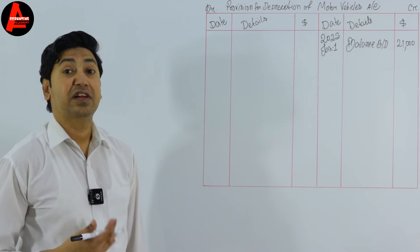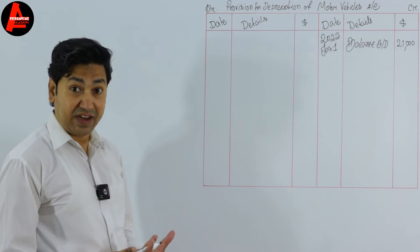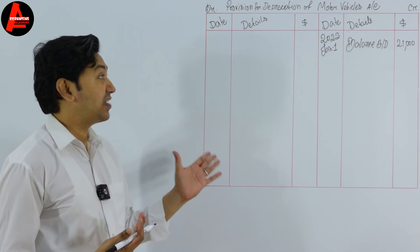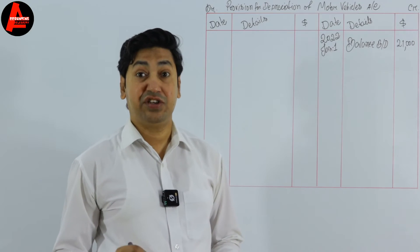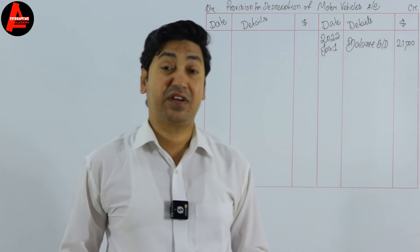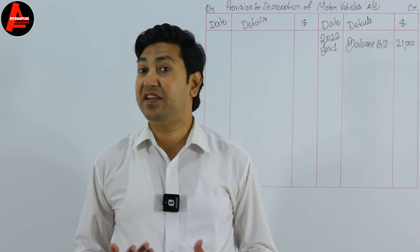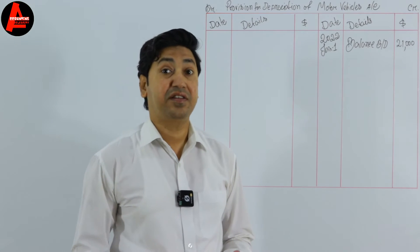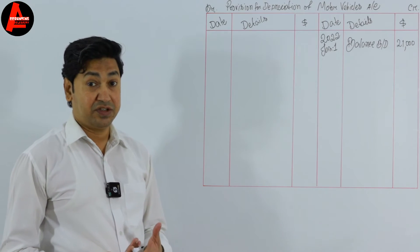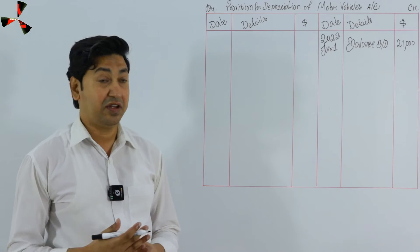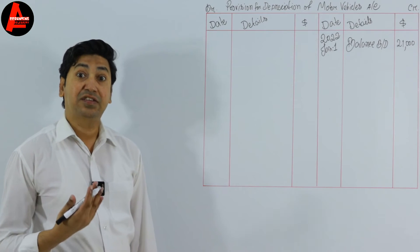We also need to calculate the current year's depreciation, which appears on the income statement because depreciation is an expense for the business. The current year depreciation is not directly given in the question, so we need to calculate it. She has motor vehicles worth $48,000, which is the closing balance figure.